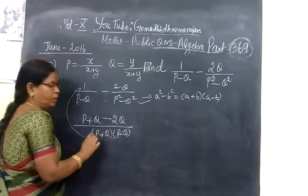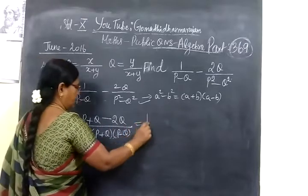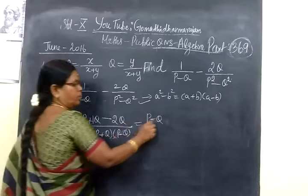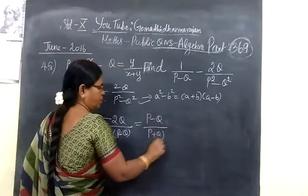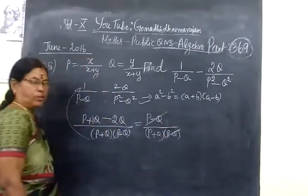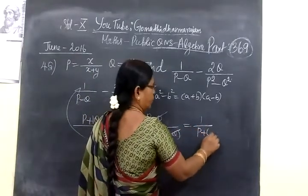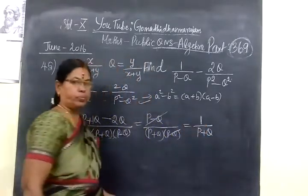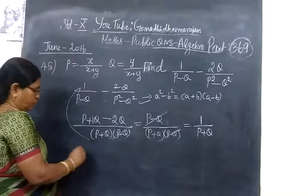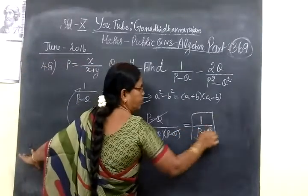So applying the minus 2Q, you write P+Q in the denominator. This gives P minus Q terms. Then 1/(P+Q) minus 2Q/(P+Q). P-Q gets cancelled, and this is the remaining P minus Q. So P-Q divided by P-Q, we have a simplified result.